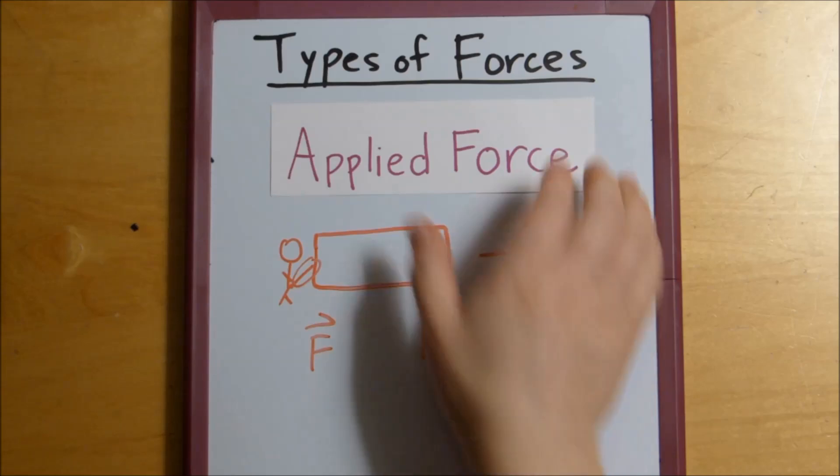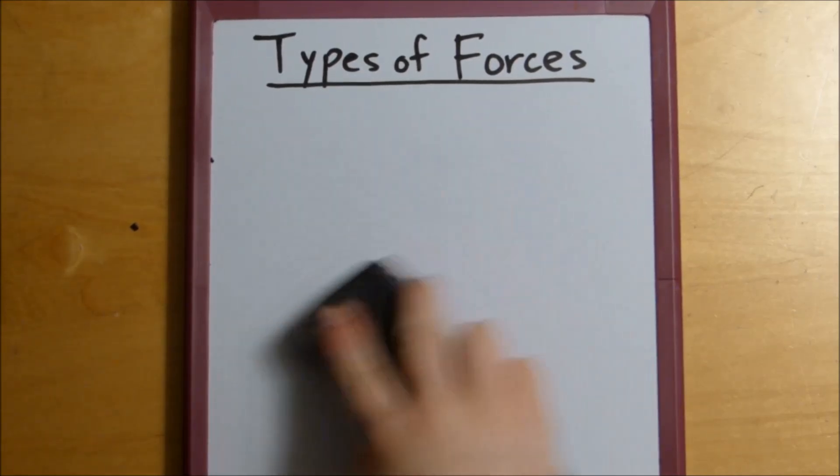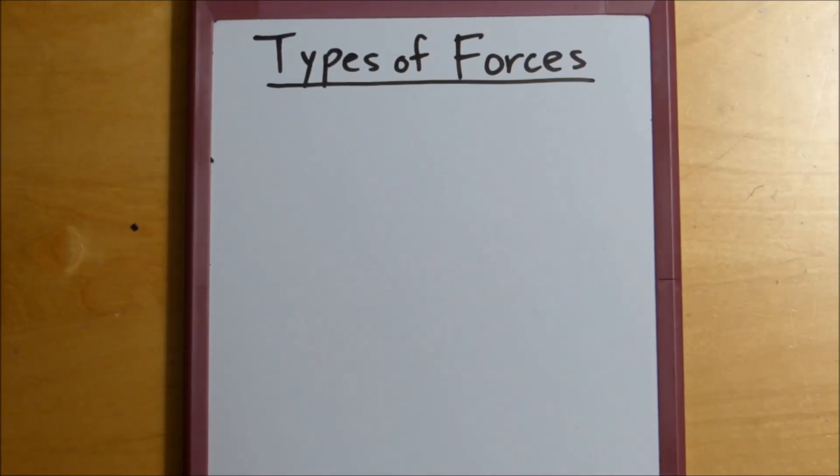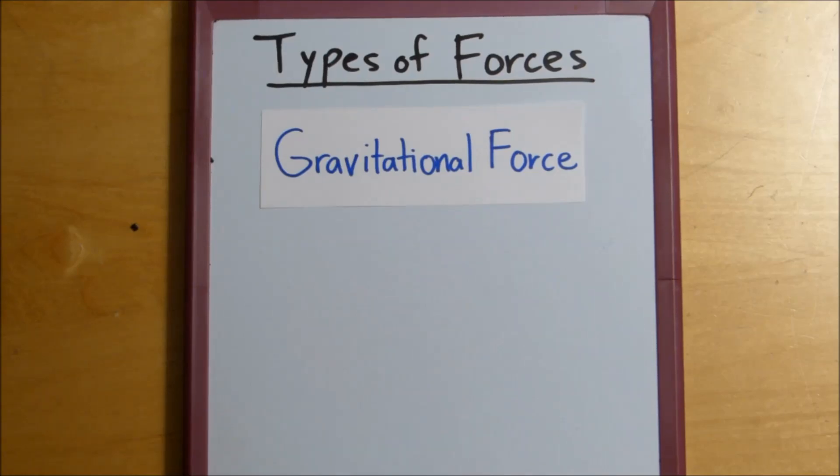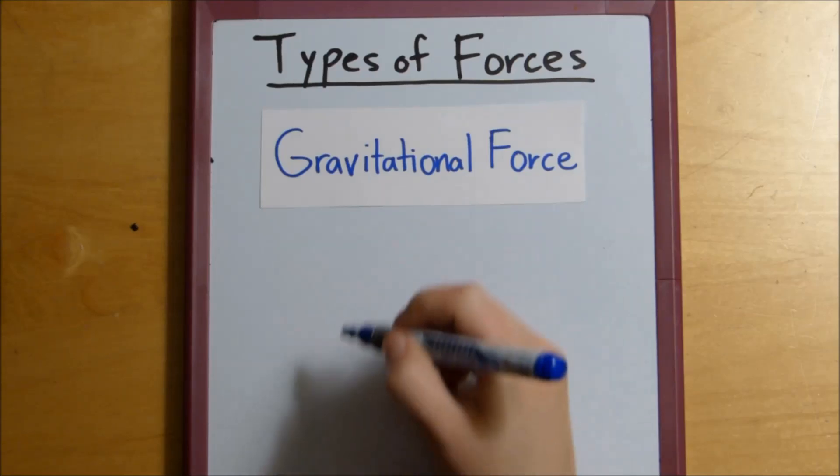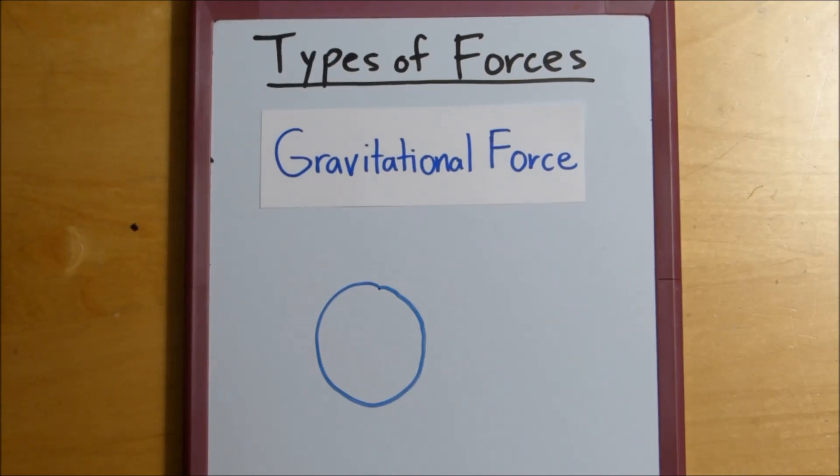Okay, so the next force is gravitational force. And this is the force that huge objects, we're talking planet size, apply to other objects. Say for example, the Earth. We all know that there is gravity on Earth. Gravity is what prevents you from floating up into the sky when you jump.